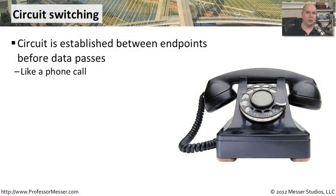On a circuit switch network, you're bringing up connections as you need them. You're sending traffic across that connection — you're sending voice across that connection — and then you're tearing down the connection at the end. This is very much like using a telephone, where you pick it up, you dial some numbers, you talk for a little while, and then at the end of the phone call, you hang up and that connection is terminated.